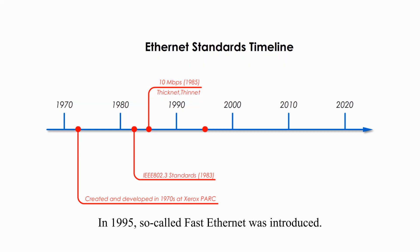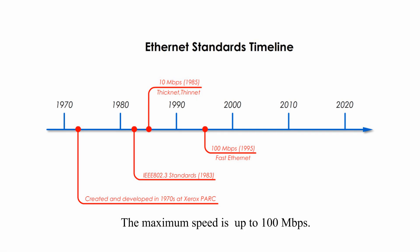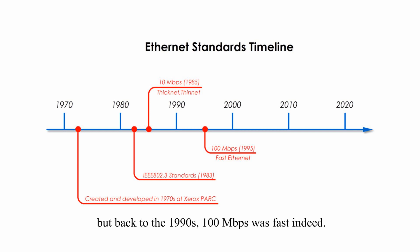In 1995, so-called Fast Ethernet was introduced. The maximum speed is up to 100 megabits. Fast Ethernet is not fast at all by today's standards, but back in the 1990s, 100 megabits was fast indeed.